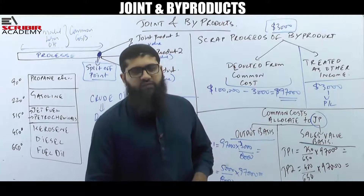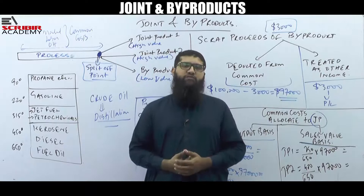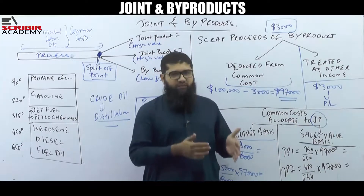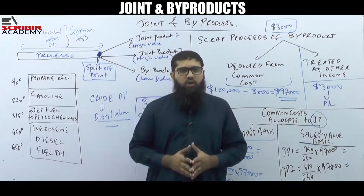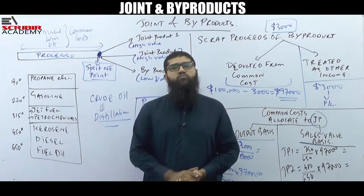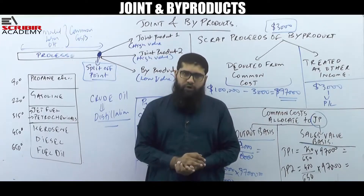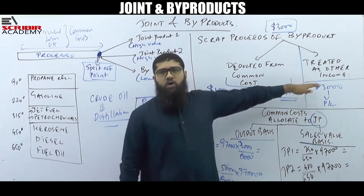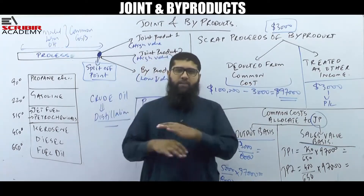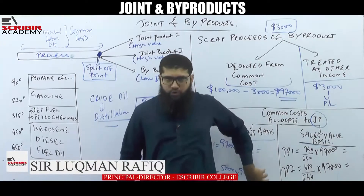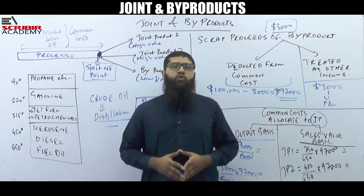To summarize what we discussed: if during a manufacturing process you come across multiple products, classify them into joint products — which are high-value products — and byproducts, which are scrap-type products. Establish the scrap proceeds of the byproduct and either recognize them as other income or deduct them from the common cost. Then apportion the common costs to the joint products either on the basis of output or on the basis of sales value. Thank you very much everyone, see you again soon.